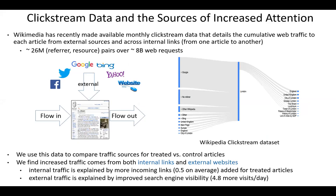Where does this attention come from? Using Wikipedia clickstream data, we found increased traffic comes from both internal links and external websites. Internal traffic is explained by more incoming links from other articles pointing to the edited article. External traffic is likely explained by improved search engine visibility.